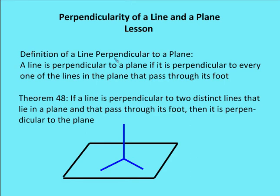As part of the homework I assigned to my students, I'm going to ask them to prove Theorem 48. Theorem 48, at least in our book, says that if a line is perpendicular to two distinct lines that lie in a plane and pass through its foot, then it is perpendicular to the plane.